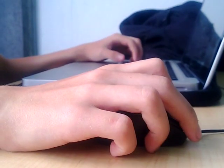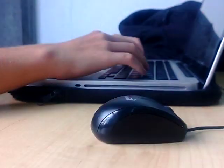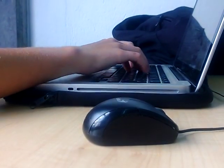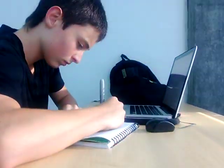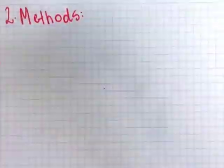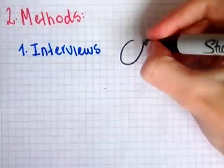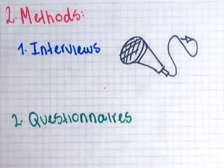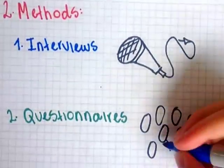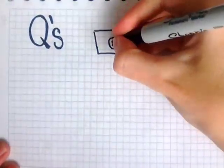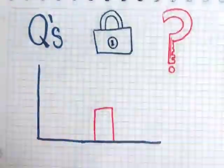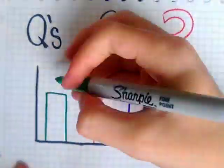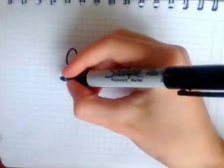When looking for specific information through direct interaction, you can use two methods: interviews when addressing a single individual, and questionnaires when addressing a larger demographic. Questionnaires are characterized by offering close-ended questions that provide standardized results.